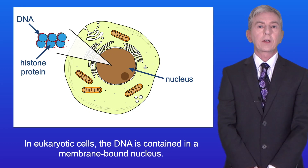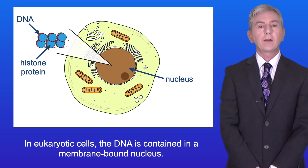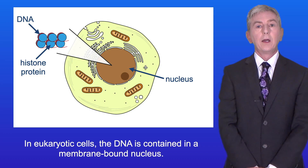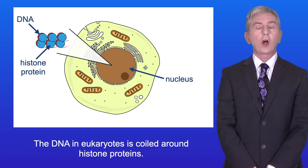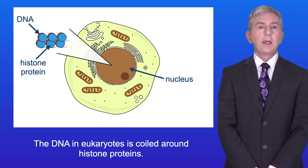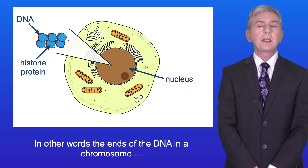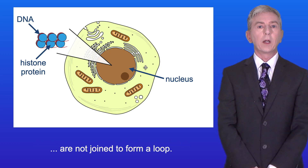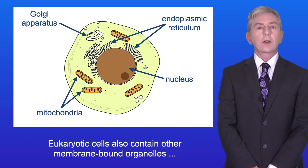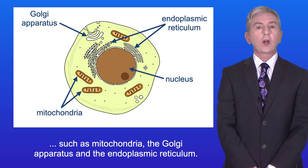In eukaryotic cells the DNA is contained in a membrane-bound nucleus and the DNA in eukaryotes is coiled around histone proteins. In eukaryotes the DNA is linear — in other words the ends of the DNA in a chromosome are not joined to form a loop. Eukaryotic cells also contain other membrane-bound organelles such as mitochondria, the Golgi apparatus and the endoplasmic reticulum.